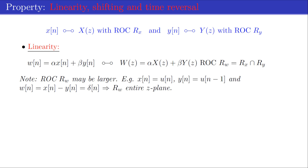For example, if x[n] is u[n], the unit step function, and y[n] is u[n] minus 1, the region of convergence of both X(z) and Y(z) is outside the circle with radius 1. However, the z-transform of w[n] = x[n] - y[n], which equals delta[n], has a region of convergence that is the entire z-plane.